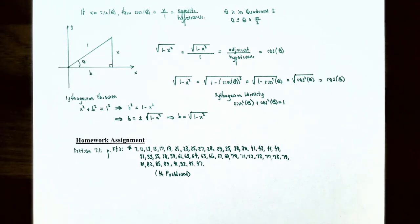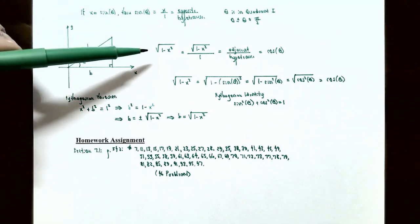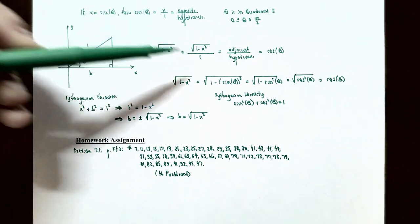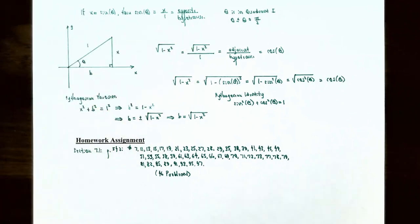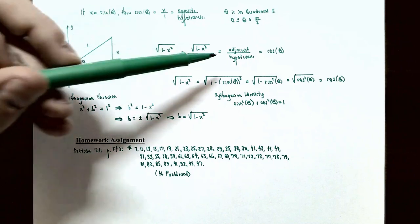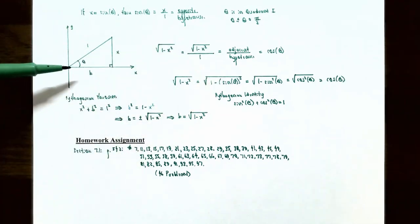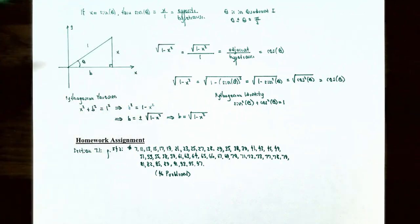Now apply the substitution x = sin θ to replace √(1 − x²). Since adjacent / hypotenuse = cos θ, and the adjacent side is √(1 − x²) while the hypotenuse is 1, we have √(1 − x²) / 1 = cos θ. So √(1 − x²) = cos θ using right triangle trigonometry.